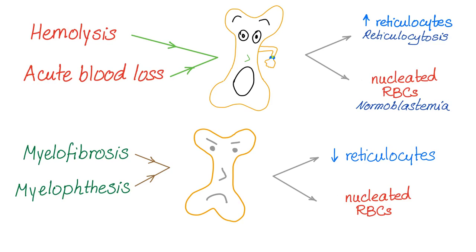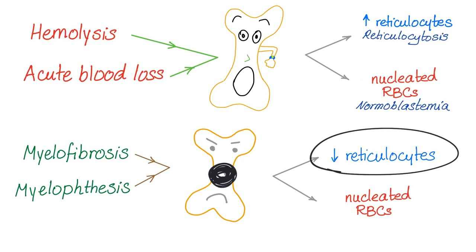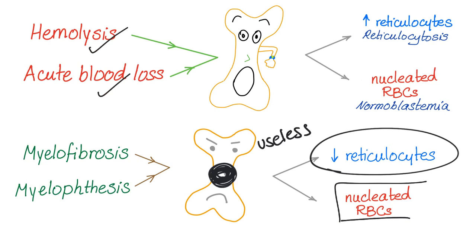On the other hand, if you have myelofibrosis or myelophthisis — infiltration of the bone marrow by something such as a tumor — you will end up with low reticulocytosis, because your bone marrow is essentially useless. You will also see nucleated red blood cells because the bone marrow cannot produce normal red blood cells. The moral of the story: nucleated red blood cells can be present in any of these cases, and the reticulocyte count will help you determine which is which.